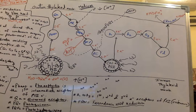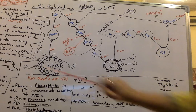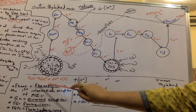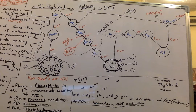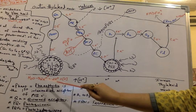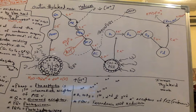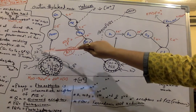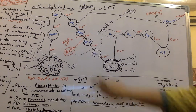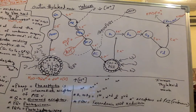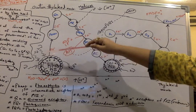Photolysis or photo-oxidation of water will release electrons, which are accepted by the unknown electron acceptor Z, and will send the electrons to the reaction center or core complex of PS2, which is P680. Energy coming from sunlight will also be absorbed by the antenna molecules, sending this absorbed energy to the reaction center of PS2.